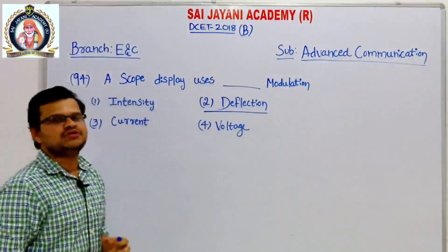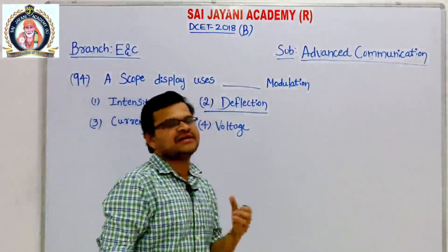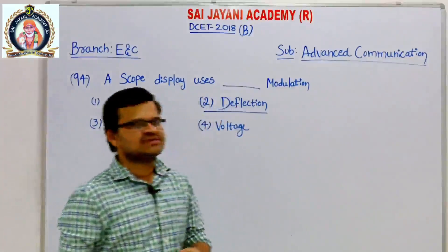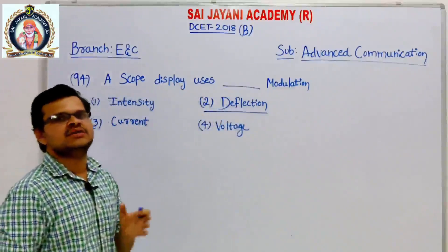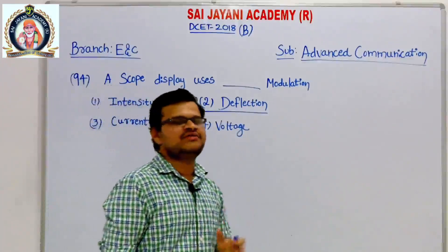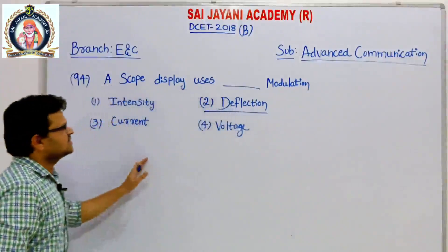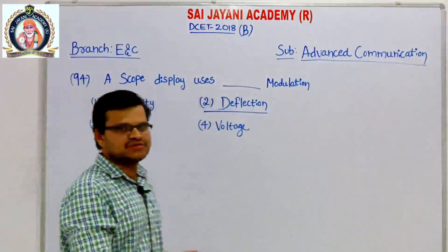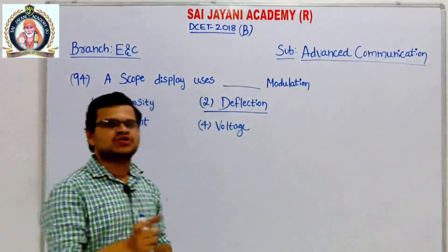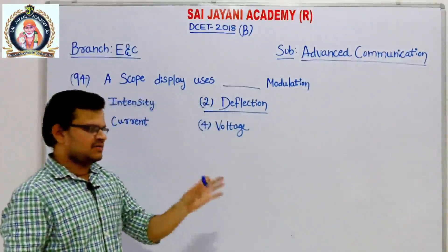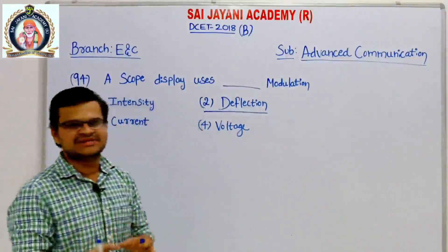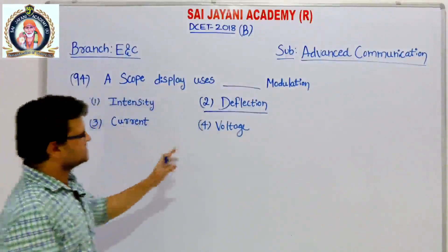The A-scope display only shows the range of the target and relative strength of the echo, but not the direction. It uses electrostatic deflection plates or CRT. The sweep is produced by applying a sawtooth voltage to the horizontal deflection plate, which determines the total range displayed on the CRT screen. So the answer is deflection.